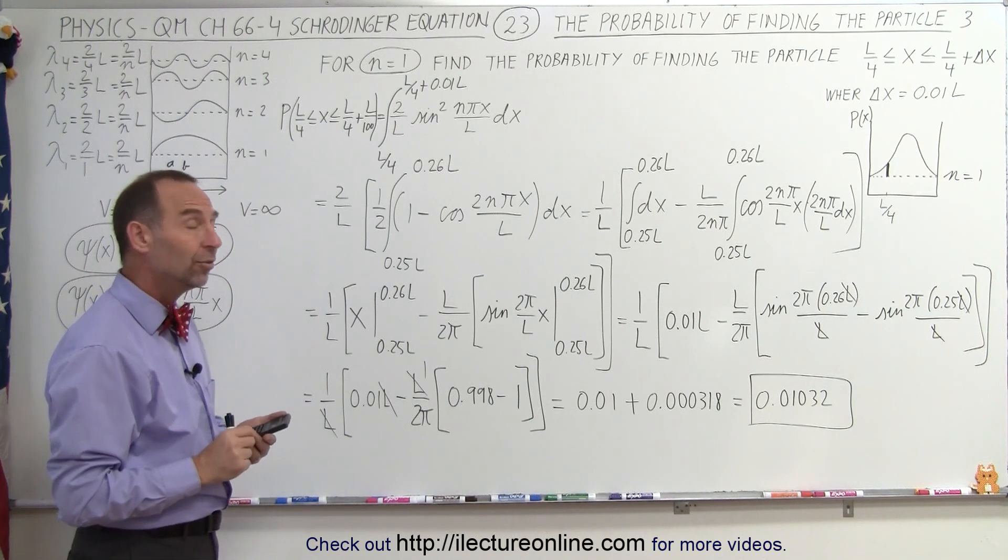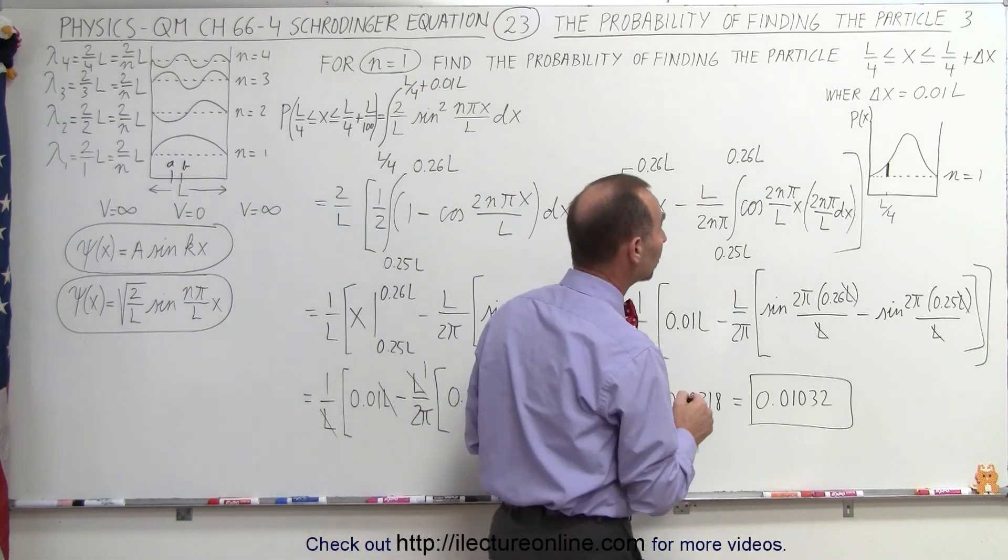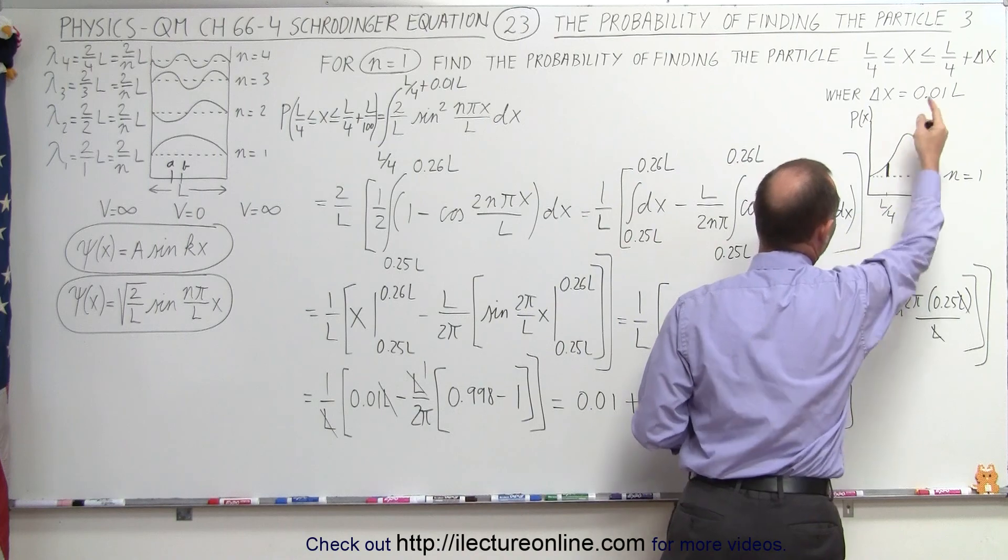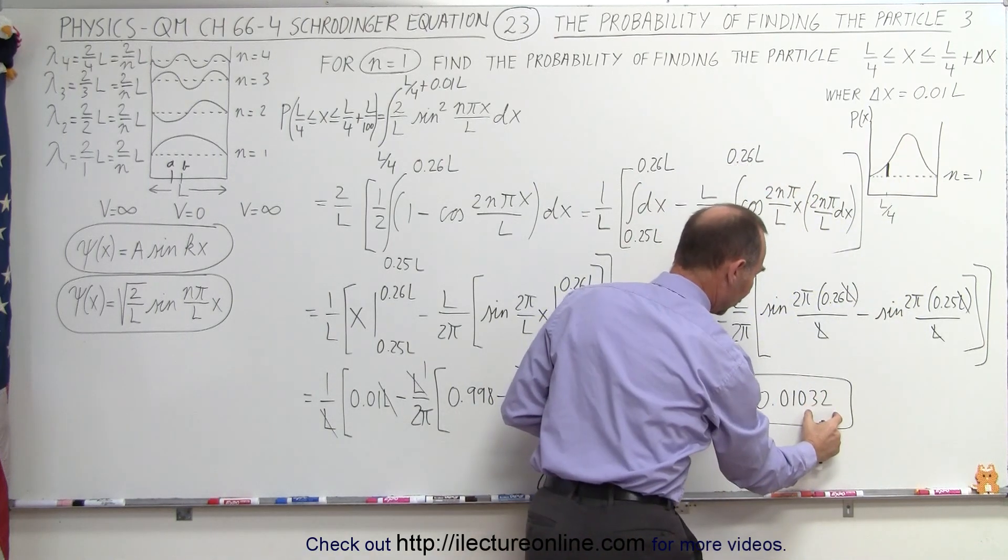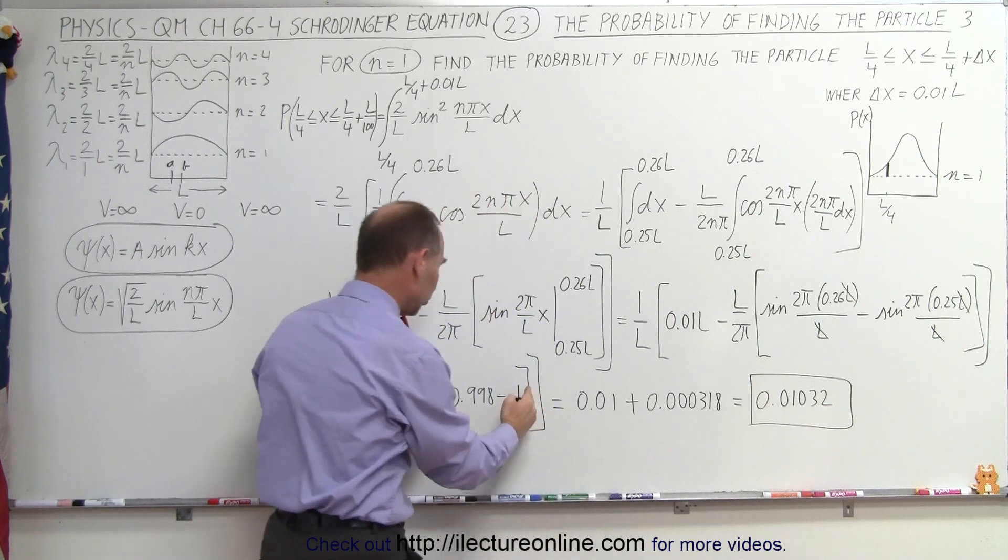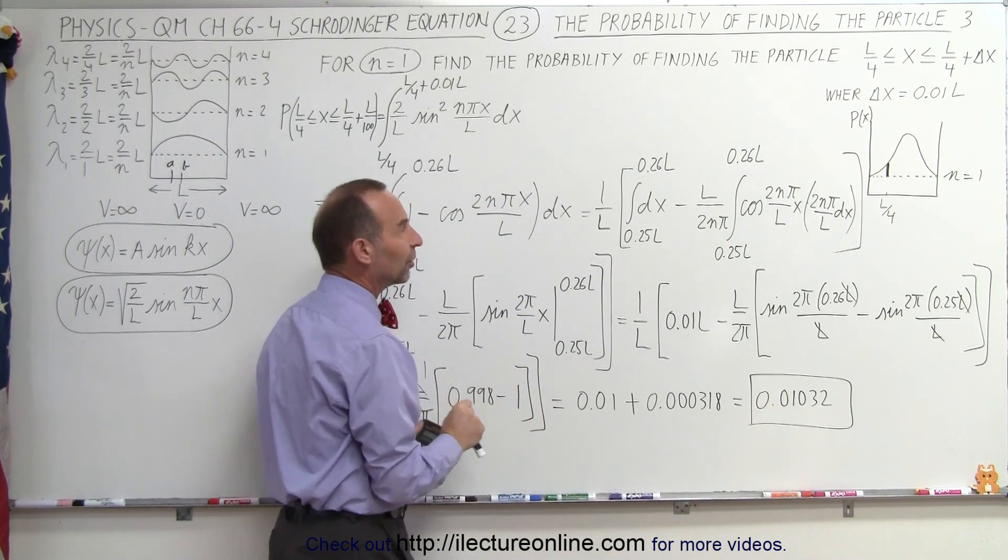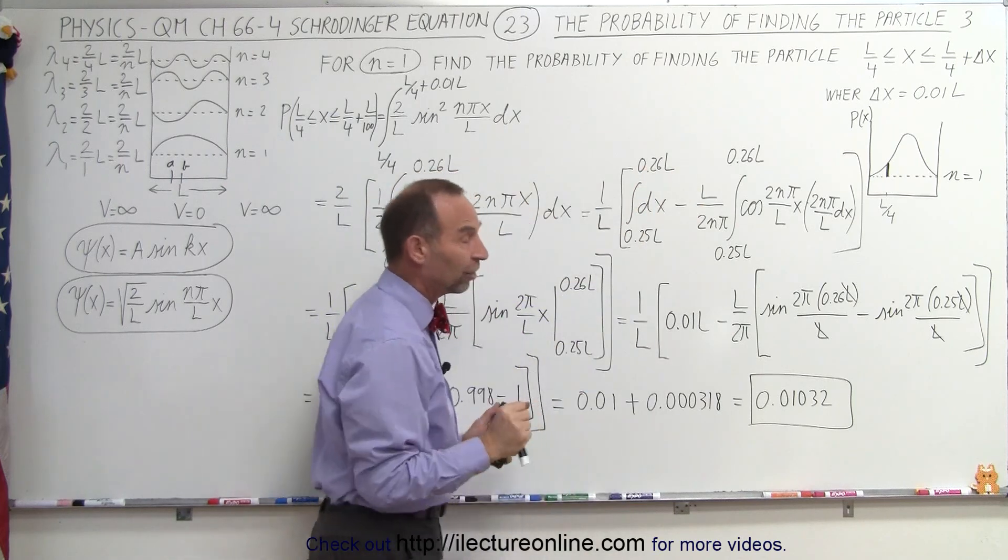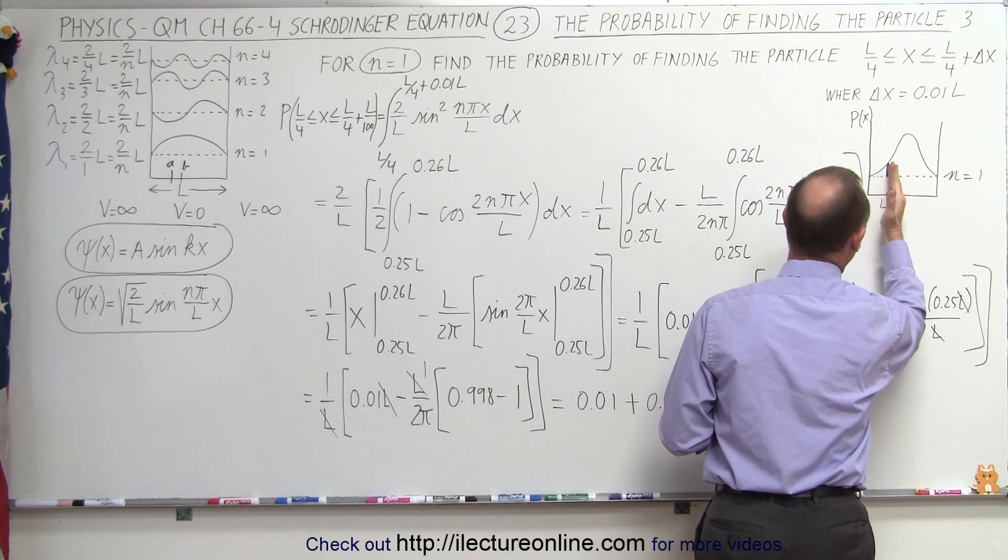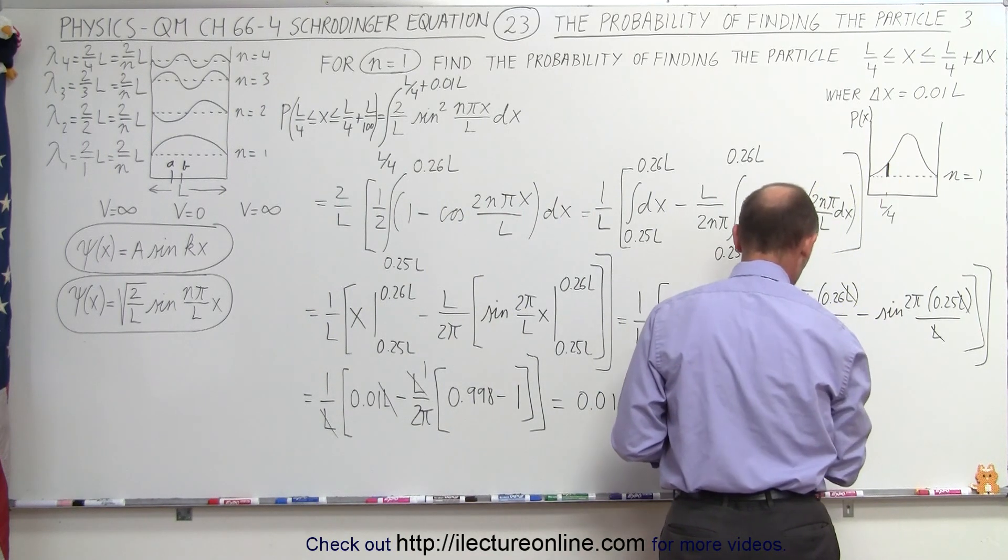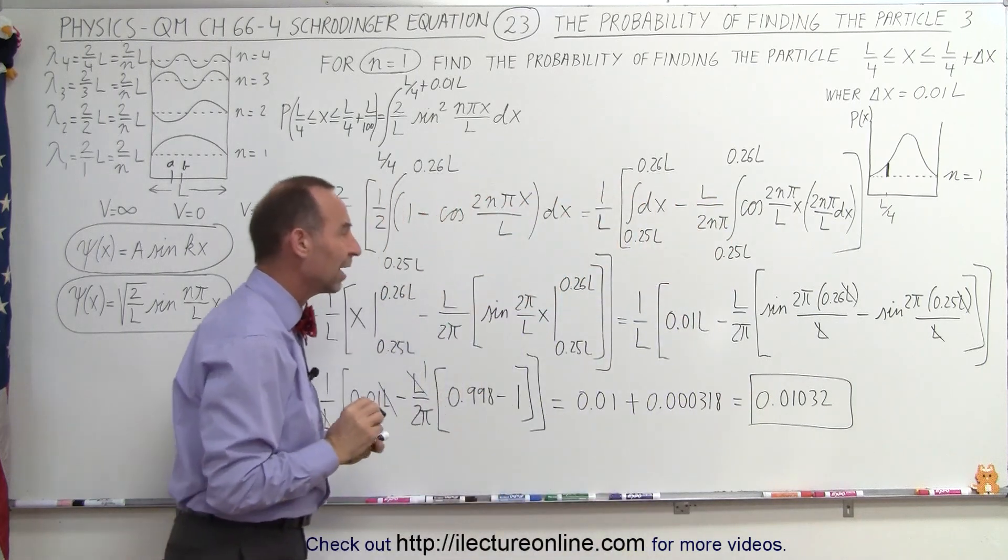Now what happens if we make delta x smaller and smaller and smaller? In the limit, as delta x goes to 0, notice that this quantity right here, the second portion of the interval becomes smaller, smaller, smaller, and eventually this becomes 0 as delta x approaches 0. In other words, what is the probability of finding the particle right at that location, L over 4? That would be exactly 0.01. So that's how we try to figure that out.